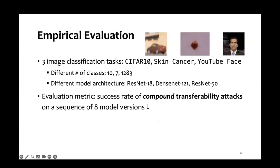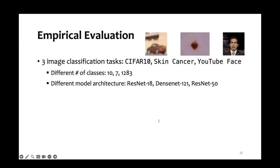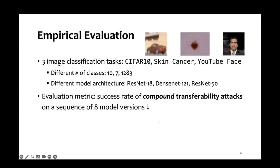In our empirical evaluation, we evaluate on three image classification tasks, including object classification, medical images, and face recognition. These tasks have different numbers of classes, and they use different model architectures. We use the success rate of compound transferability attack on a sequence of eight models as our evaluation metric. We also conduct ablation studies on different attack and defense configurations.